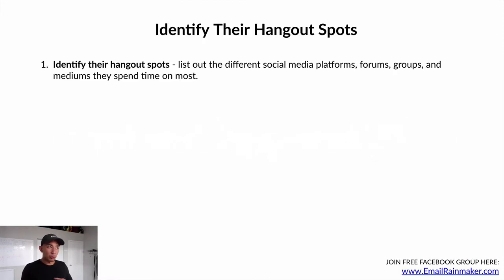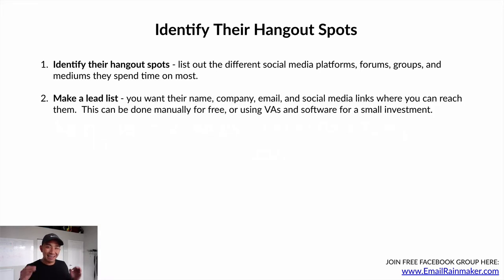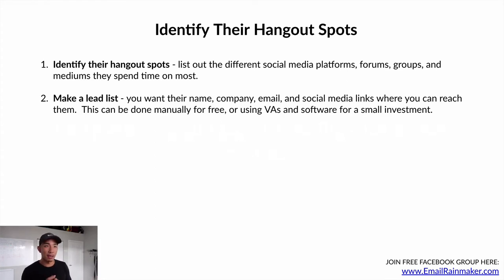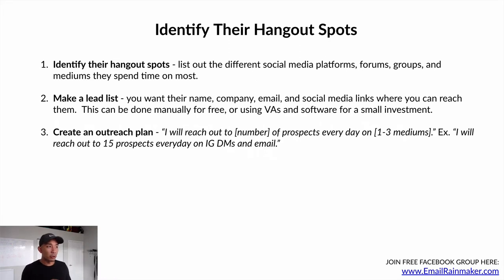What we're going to do is three steps. Number one, identify their hangout spots — list out the different social media platforms, forums, and groups they spend the most time on. Number two, make a lead list with their name, company, email, and social media links. This can be done manually for free using a spreadsheet, or you can use a virtual assistant or software for a small investment. Number three, create an outreach plan. Decide you'll reach out to X number of prospects every day on one to three different mediums — for example, 15 prospects every day on Instagram DMs and email.